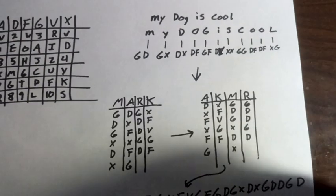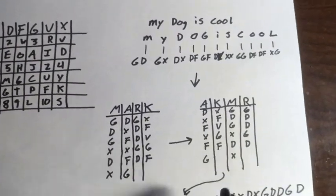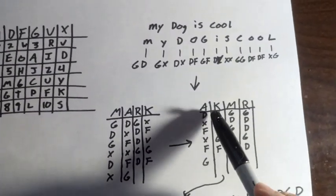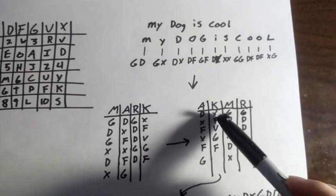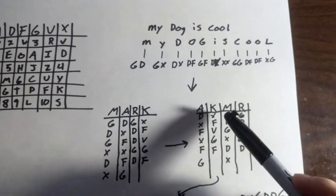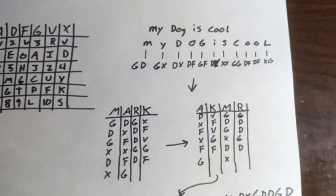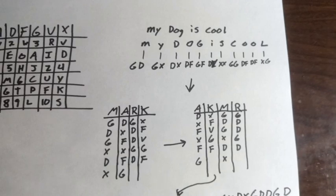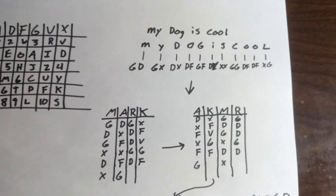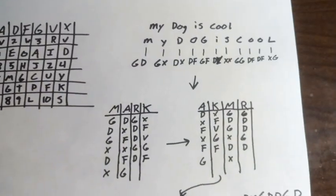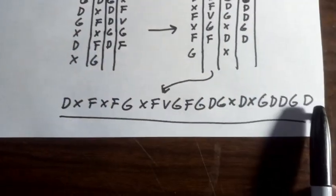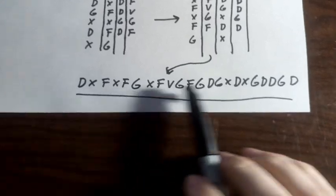Then, to get your final cipher text, you go DX, F, XFG, DXF, XFVG, and so on. You just read it down in column order and end up with this cool looking code that only contains the letters ADFGVX.